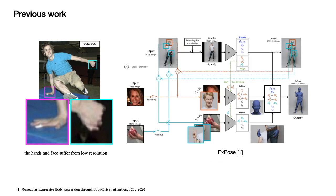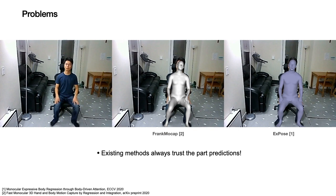Previous work uses separate networks to regress the body, face, and hands, and then combines their results. The problem is that such methods always trust the separate part predictions. However, these part predictions can be wrong.